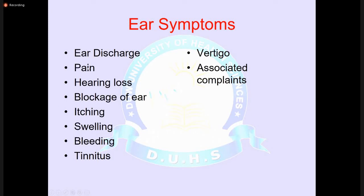Ear pain: the outer ear canal and pinna are commonly the source of pain. For example, a boil in the ear canal causes severe pain. In middle ear disease, there is less chance of ear pain. When the external auditory canal or external ear is affected, pain is the predominant symptom, giving a clue about whether the problem is in the external ear.